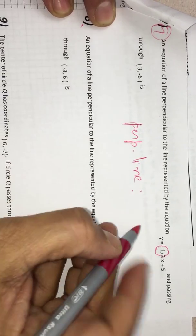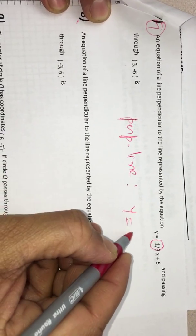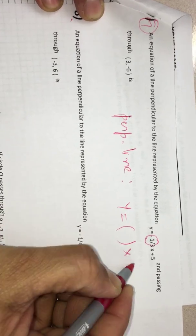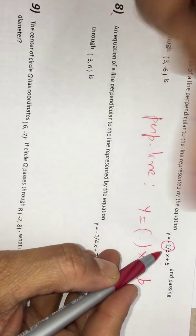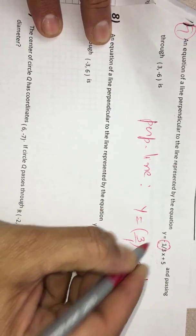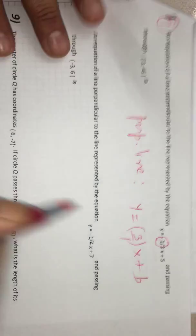Perpendicular line equation: Y is equal to MX plus B, but the slope is negative reciprocal of this. This is negative 1 over 3. When you flip it, you will get 3 over 1. Negative of negative is positive.